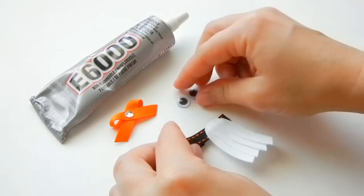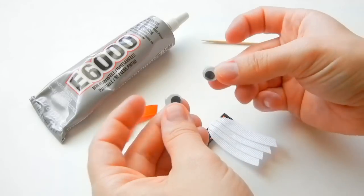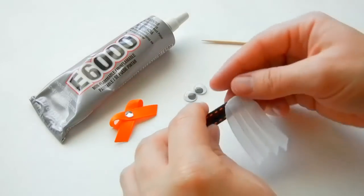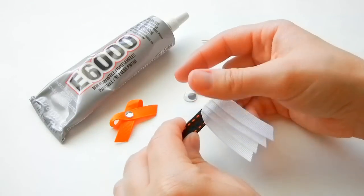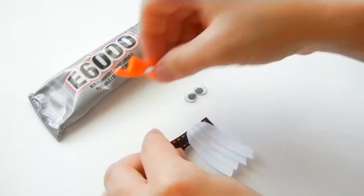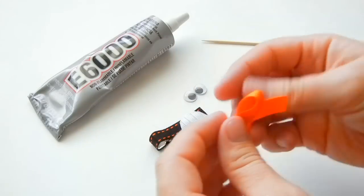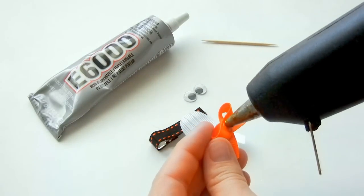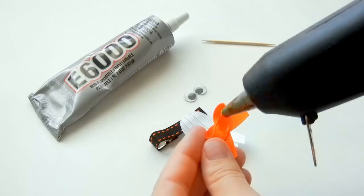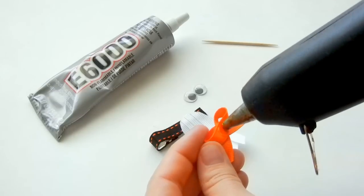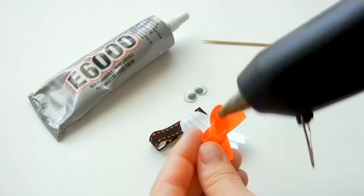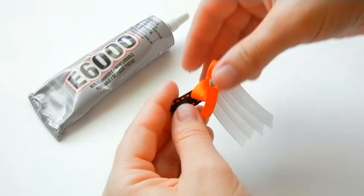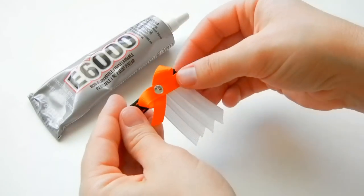And the googly eyes that I have are kind of big. You'll want to get a little bit smaller ones, but I kind of like mine to be a little bit bigger. But for the most part you'll want smaller ones. And now I'm going to add the bow. I'm just going to take some hot glue to the back of the bow and you can place it however you want.